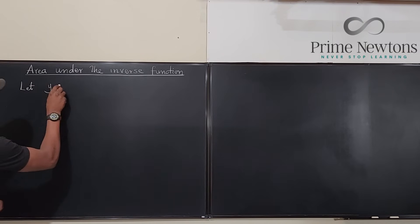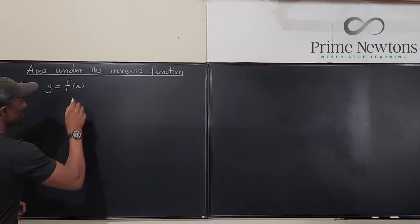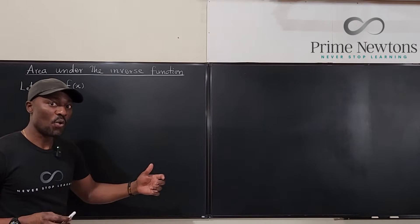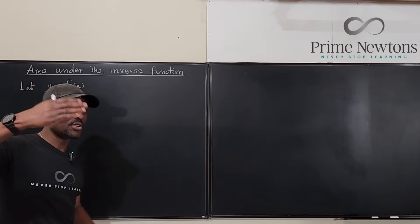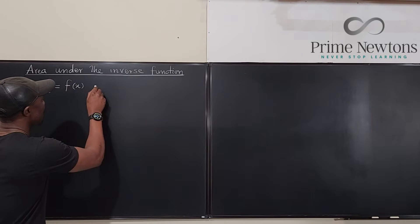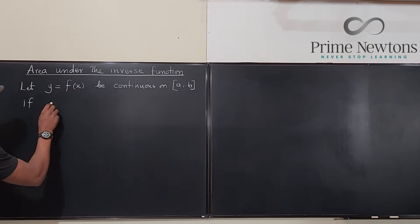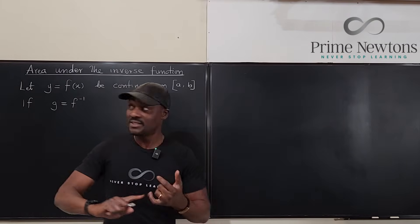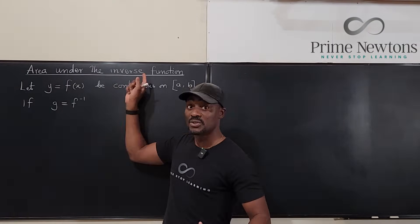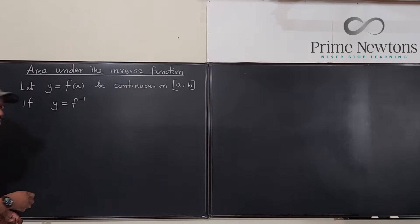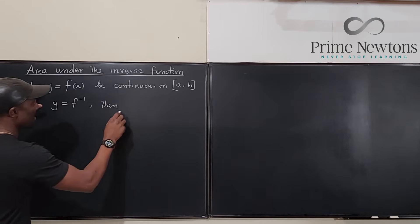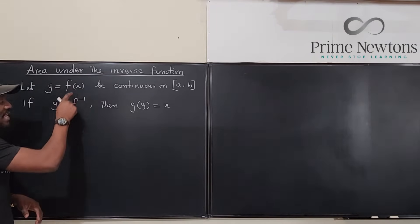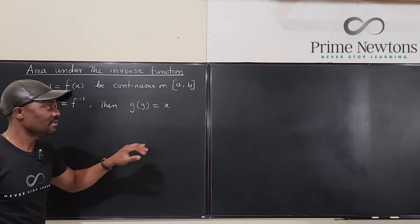Let y equal f(x). This function f(x) is continuous and differentiable over a closed interval — it has to be a closed interval so we don't get issues at the boundaries. Now if g is the inverse of f, meaning f is invertible, then g(y) must equal x. When you put the output y into g, you get your original input x back — that's the meaning of inverse functions.